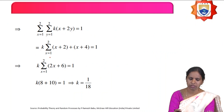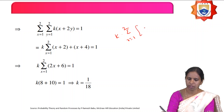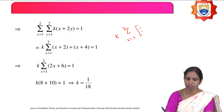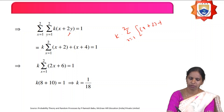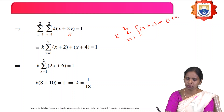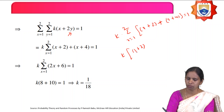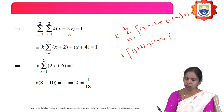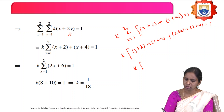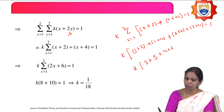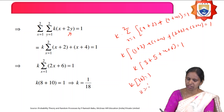Since k is constant, bring it outside. Substituting y = 1: sigma over x = 1 to 2 of (x + 2). Substituting y = 2: sigma of (x + 4). Then substituting x = 1: (1+2) + (1+4) = 3 + 5 = 8. Substituting x = 2: (2+2) + (2+4) = 4 + 6 = 10. So k(8 + 10) = k·18 = 1, therefore k = 1/18.